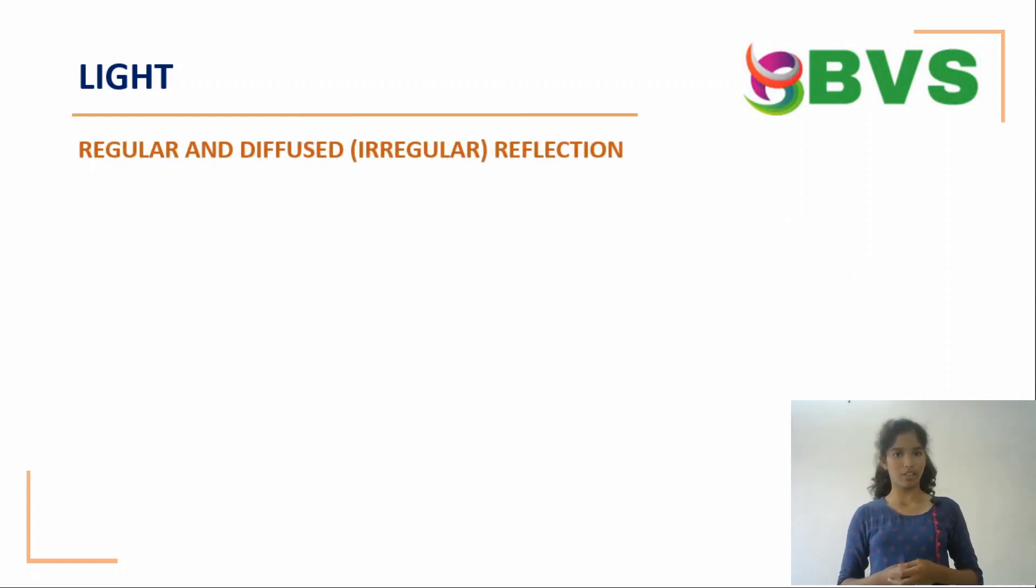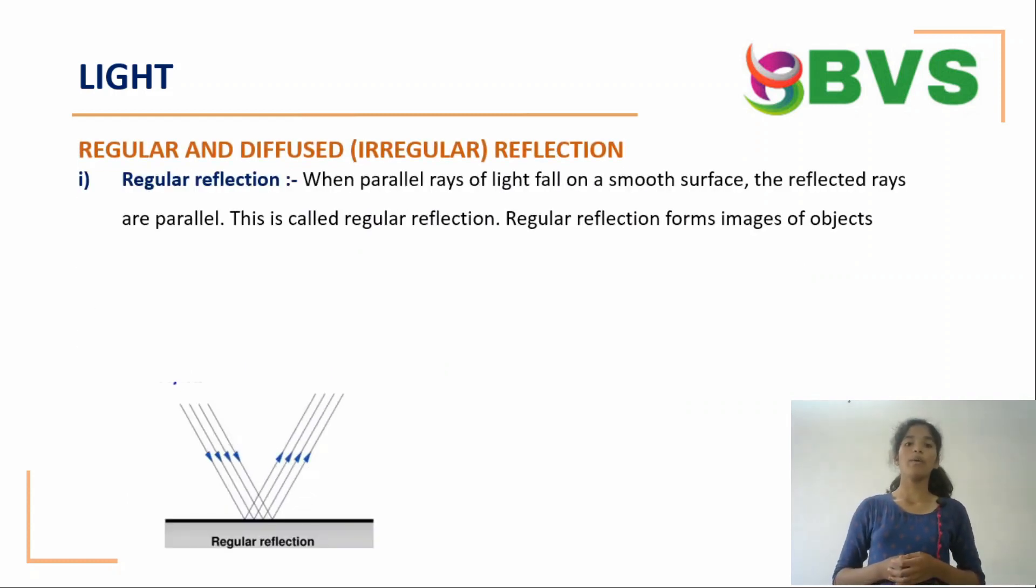Regular and diffuse reflection. Regular reflection: When parallel rays of light fall on a smooth surface, the reflected rays are parallel. This is called regular reflection. Regular reflection forms images of objects.